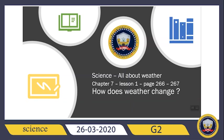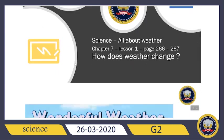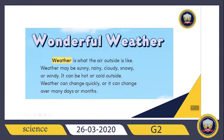This chapter is all about weather. Do you see this question? How does weather change? The weather is what the air outside is like. The weather may be sunny, rainy, cloudy, snowy, or windy.